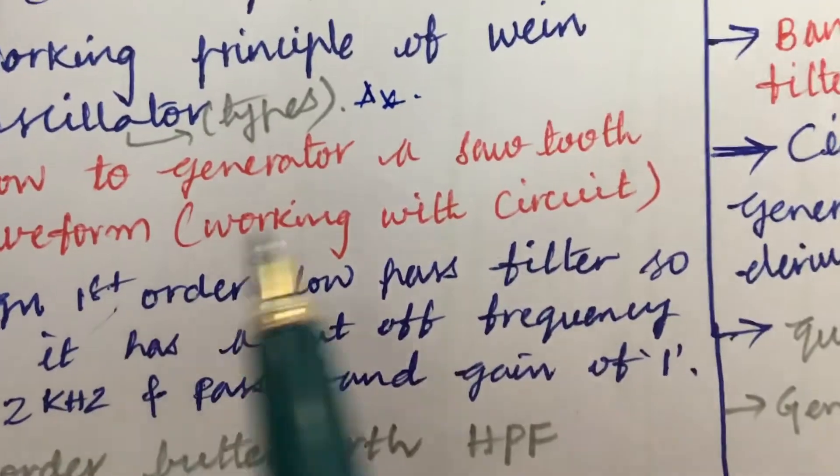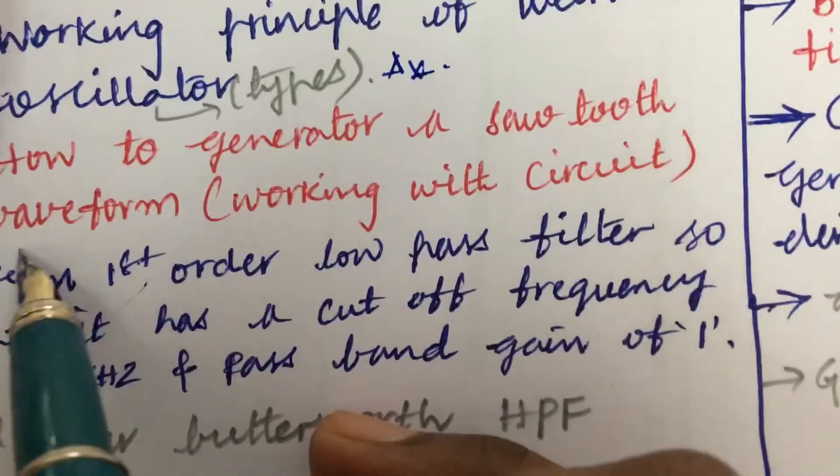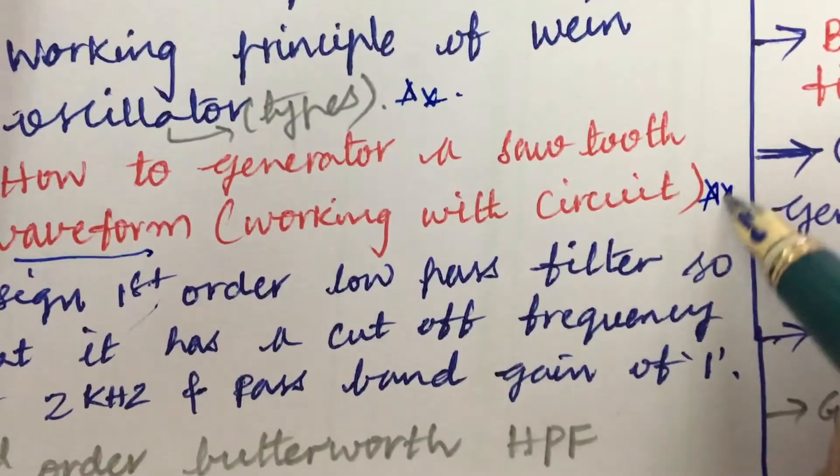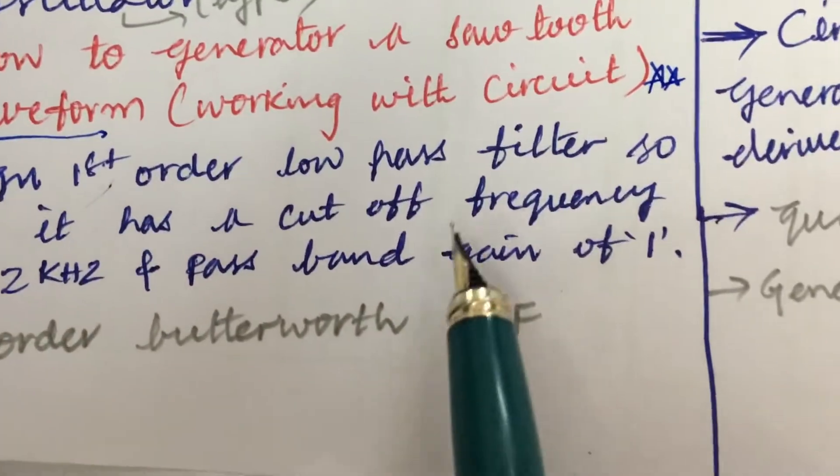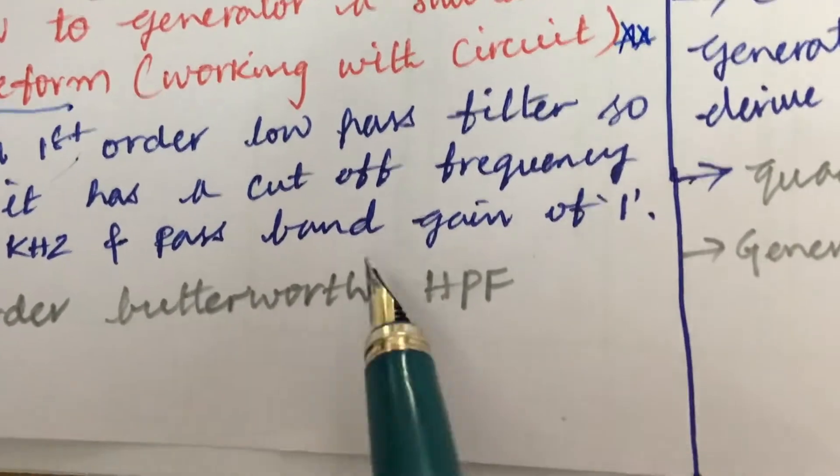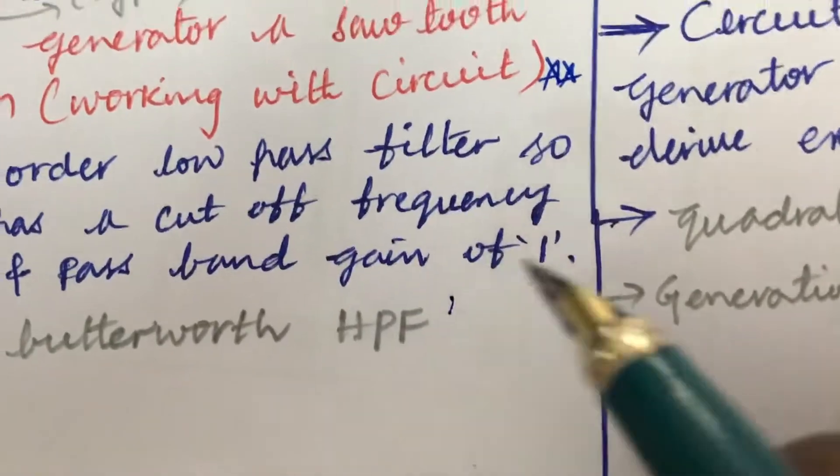How to generate a sawtooth waveform related to the waveform and the types you will be getting one question for sure. Please work out accordingly. Design first order low pass filter so that it has a cutoff frequency of 2 kilohertz and pass band gain of 1. Second order Butterworth HPF.